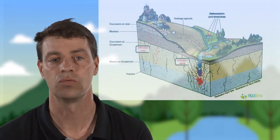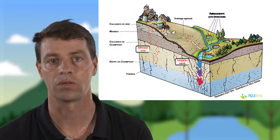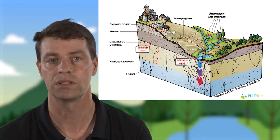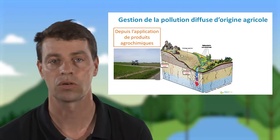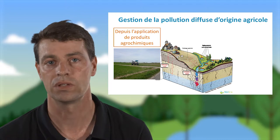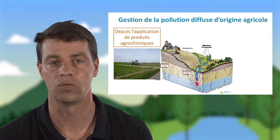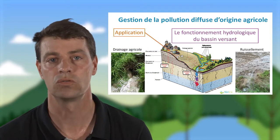L'agriculture contribue à la dégradation de la qualité de l'eau. La gestion de la pollution diffuse est un objectif premier des politiques publiques afin de préserver la qualité écologique des milieux aquatiques. D'un côté, nous avons les agriculteurs qui utilisent des intrants, que ce soit les pesticides ou les fertilisants d'origine azotée ou phosphorée. Depuis leur application pour des fonctions agronomiques, nous avons le fonctionnement hydrologique du bassin versant.